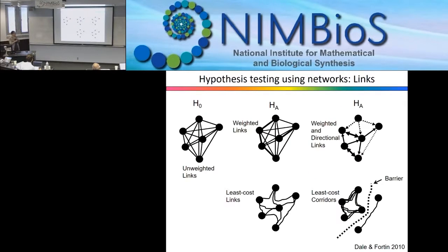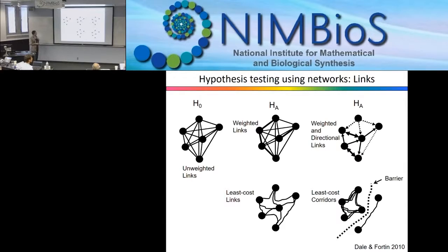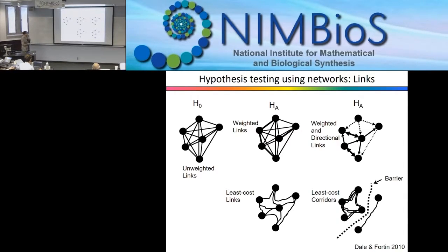We can test our hypotheses. We can have a null hypothesis that all populations can interact and exchange genes with all others. Then we can say there's gene flow that is more intense in some relationships — maybe animals are affected by landscape resistance due to different habitat types. We can also have directionality and barriers. So we can test isolation by distance, isolation by resistance, and isolation by barrier within a network framework.